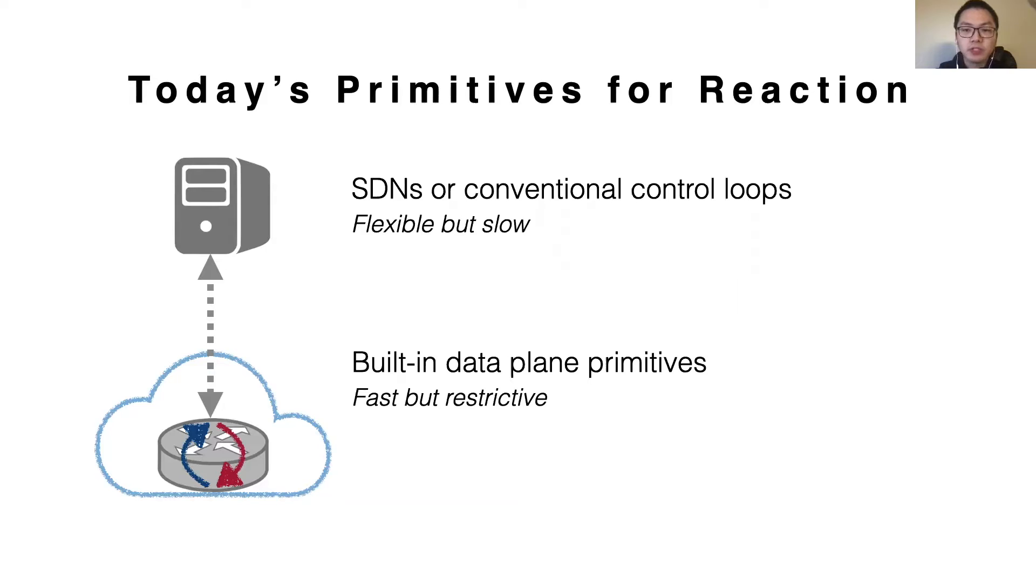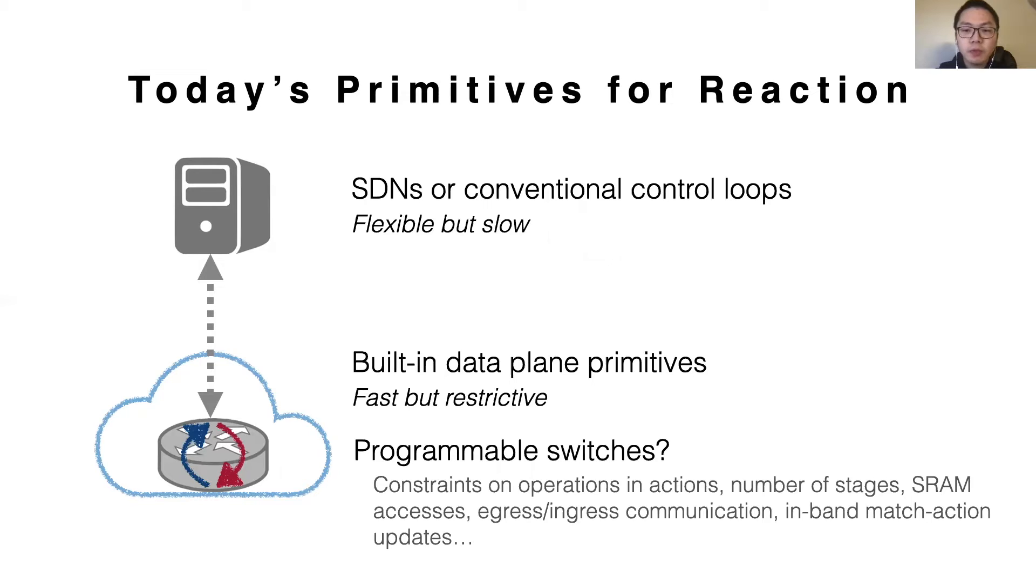The other general approach is to try to directly integrate reactions into the data plane hardware. These are fast but limited by current hardware capabilities. You might think programmable switches don't fit into this category because they are reconfigurable, yet unfortunately there's still a well-known set of limitations. For example, these constraints include limited operations and branching allowed in actions, disconnect of egress-ingress pipeline, unavailability to manipulate match action table entries from the data plane, and so on.